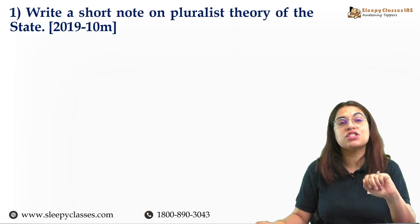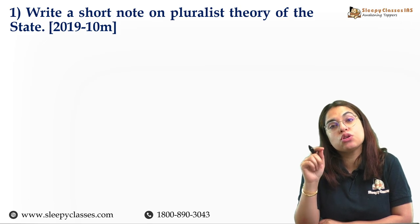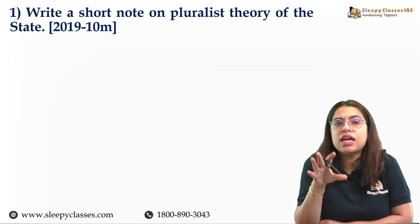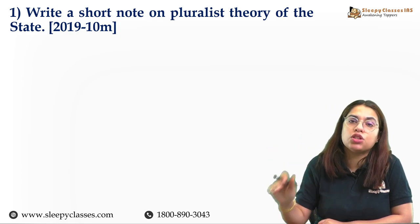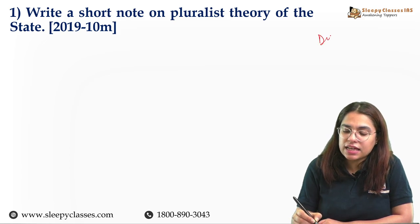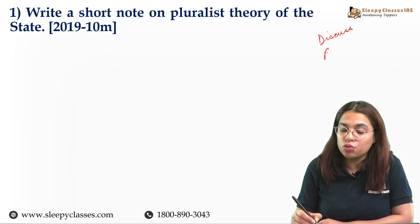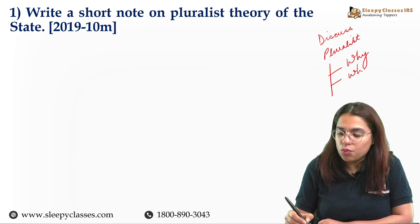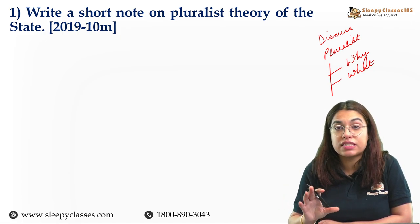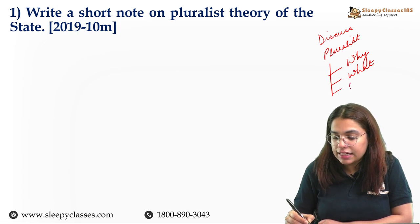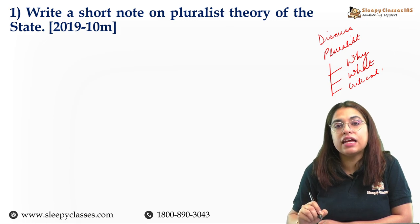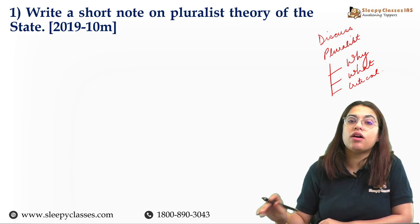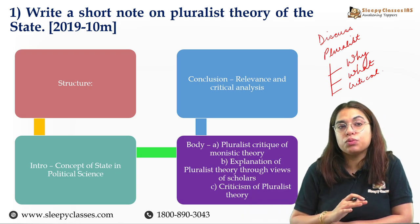Let's move on towards our first question, which is about pluralist theory of state. This is a short note, a very easy question. You have to write a short note on pluralistic theory of state covering: A — why did it emerge? B — what are its main features? And then a critical assessment, before ending with a relevant conclusion. If you address all these things, your short note is complete — and that is exactly what we teach you in the structure as well.